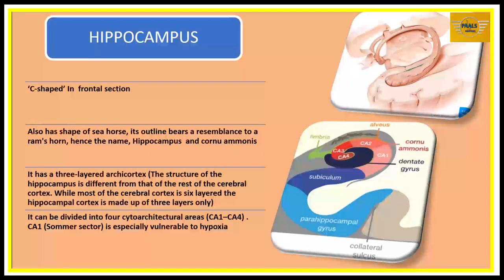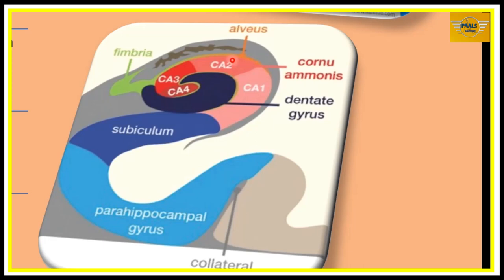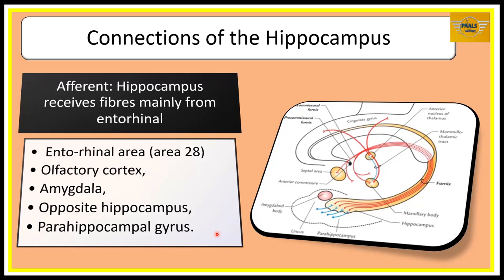The hippocampus proper gives a C-shaped appearance in a frontal section. Its structure differs from the rest of the cerebral cortex: while most of the cerebral cortex is six-layered, the hippocampus cortex is made up of three layers. It can be divided into four cytoarchitectural areas: C1, C2, C3, and C4. The C1 area is especially vulnerable to hypoxia. For the connections of the hippocampus, the major afferent connection is from the parahippocampal gyrus via the entorhinal area. Other afferent connections include the olfactory cortex, the amygdala, the opposite hippocampus, and the parahippocampal gyrus.